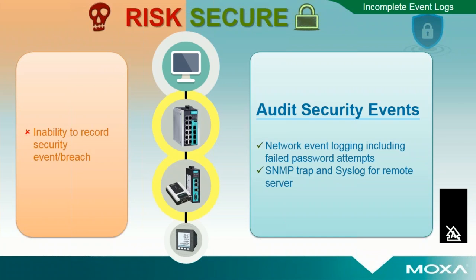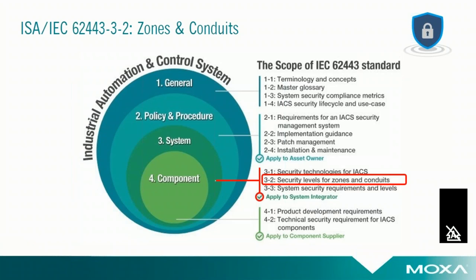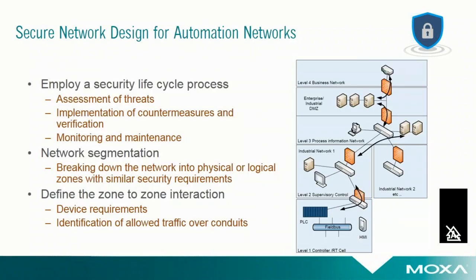Finally, auditing security events — if you have a breach and you don't know where it came from, it makes it very hard to go back and fix that hole in your system. Even if somebody is unsuccessful at gaining access to your system, if you don't know they're trying, the only way you're going to find out is once they're successful. Making sure you're logging security-related network events and storing them on either a TRAP or syslog server somewhere where you can do an audit later on in the process is critical.